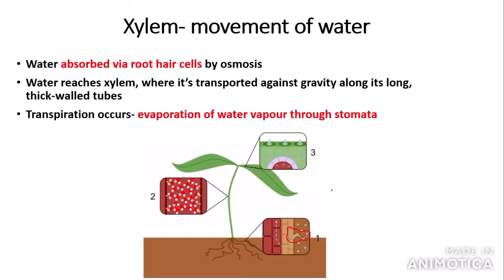Then the process of transpiration occurs — transpiration is a key word here. Transpiration is the evaporation of water vapour; the water is converted to water vapour once it reaches the stomata and is then lost through the stomata. The rate of transpiration can change with temperature: if there is a higher temperature, there is a higher rate of evaporation, and vice versa.